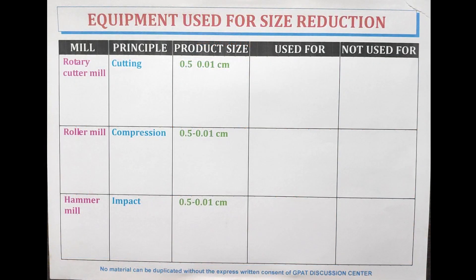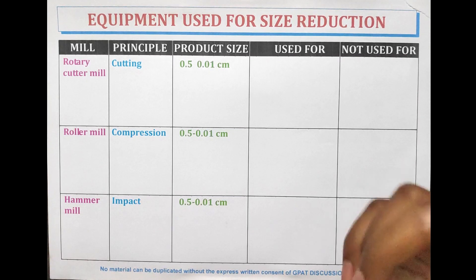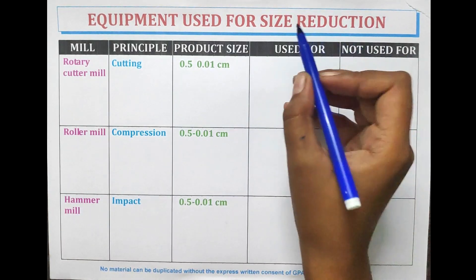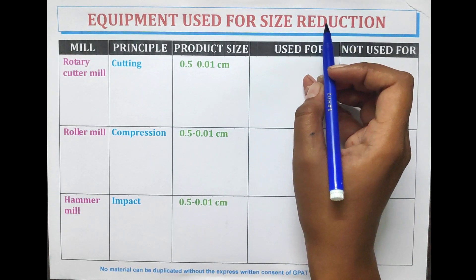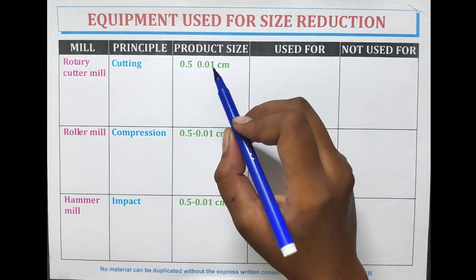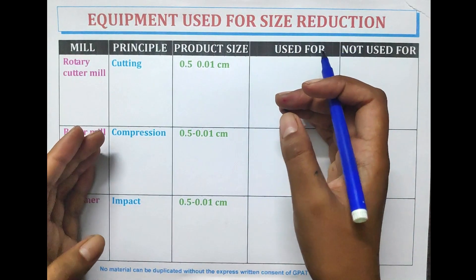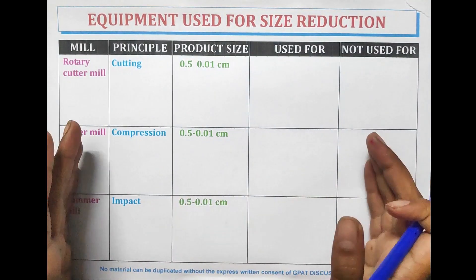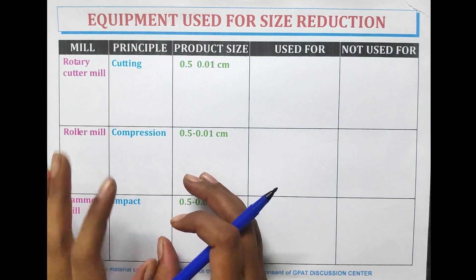Hello Pharma Aspirants, welcome or welcome back to GDC channel. In this video we are going to focus on the various types of equipments which are used in size reduction. Size reduction is the process of reducing large solid mass into smaller unit masses, that is coarse particles into fine particles.